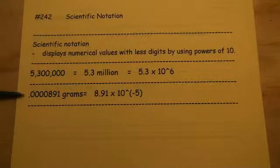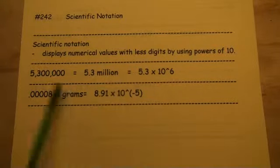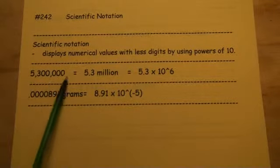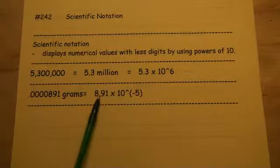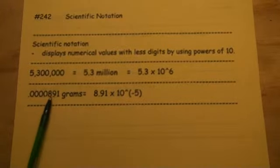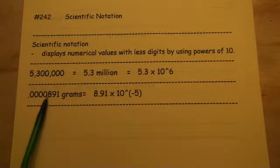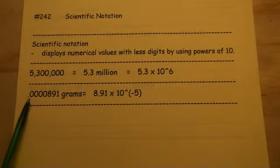So notice here, the 6 for the first example moves the decimal place to the right six places. The negative 5 moves this decimal back to the left five places. That's why this is a spot here. So 1, 2, 3, 4, and then 5.